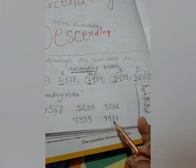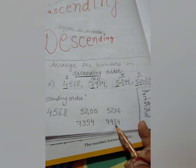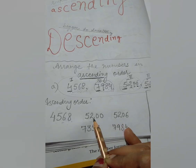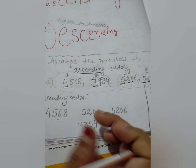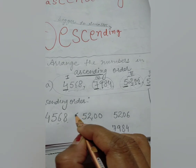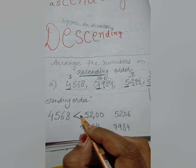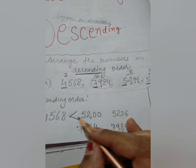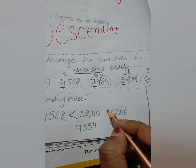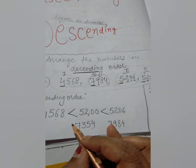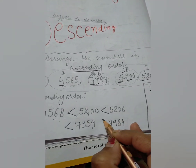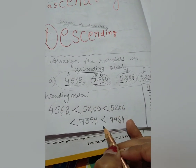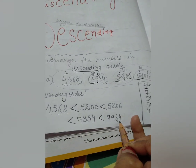So all 5 numbers have been arranged in ascending order: smallest first, then bigger, then bigger, then bigger, then the biggest. The symbol used points towards the bigger number. Starting with the smallest and ending with the biggest — this is how we write ascending order.